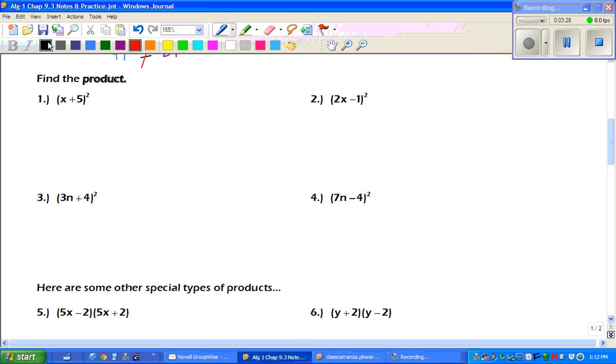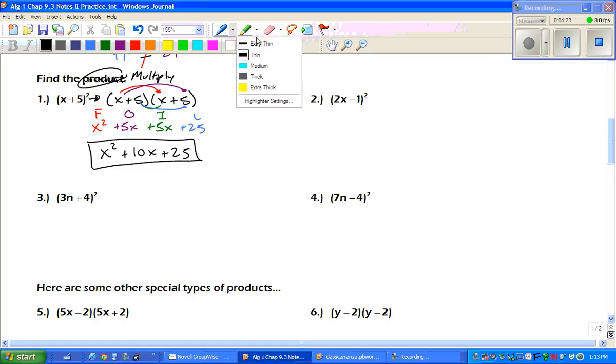All right. So for these, we have to find the product. Product means to multiply. This means x plus 5 times x plus 5. First time I do this, I'll do FOIL, and then we'll do the box method. So f for the FOIL is x squared. x times 5x gives me a positive 5x. The inside is 5x, and then the last right here gives you 25. Combine your like terms, and our final answer is x squared plus 10x plus 25.